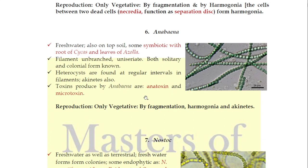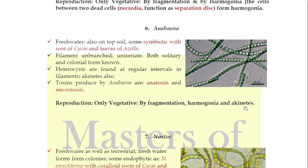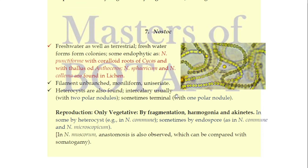In between, akinetes are also present, which are perennating structures. Importantly, Anabaena produces two types of toxins. Reproduction occurs by fragmentation and normally by fragmentation-harmogonia. Akinetes are thick-walled structures that form under unfavorable conditions. When favorable conditions return, akinetes germinate to form a new Anabaena thallus.